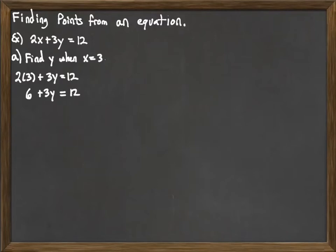So we simplify. 2 times 3 is 6. Plus 3y equals 12. And then continuing, we want to get y by itself. So just like we've done in the past now, we would subtract 6 from both sides. And when we do that, we would get 3y equals 6. And then we can finish the problem off here by dividing both sides by 3. And when we do that, we get y is equal to 2.